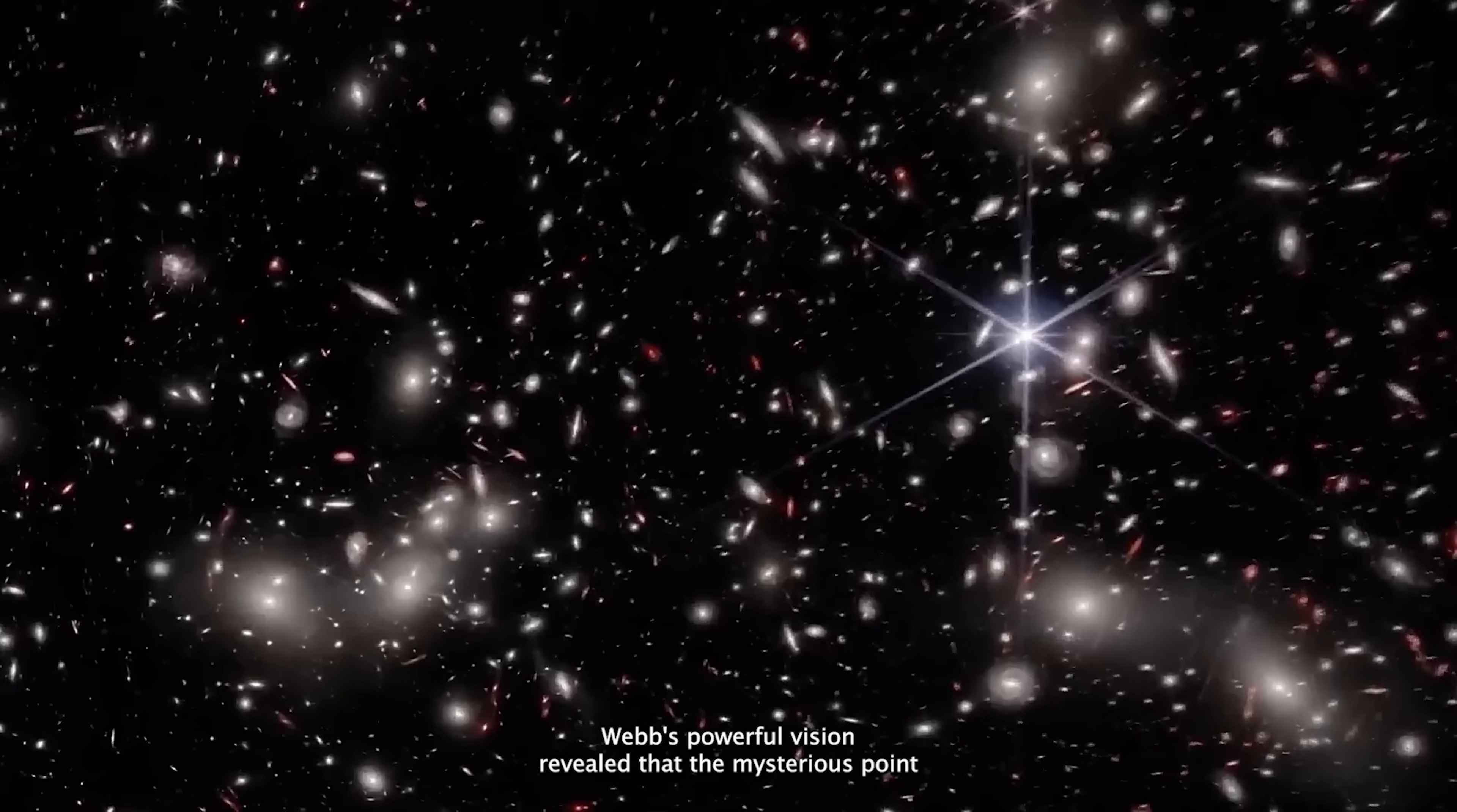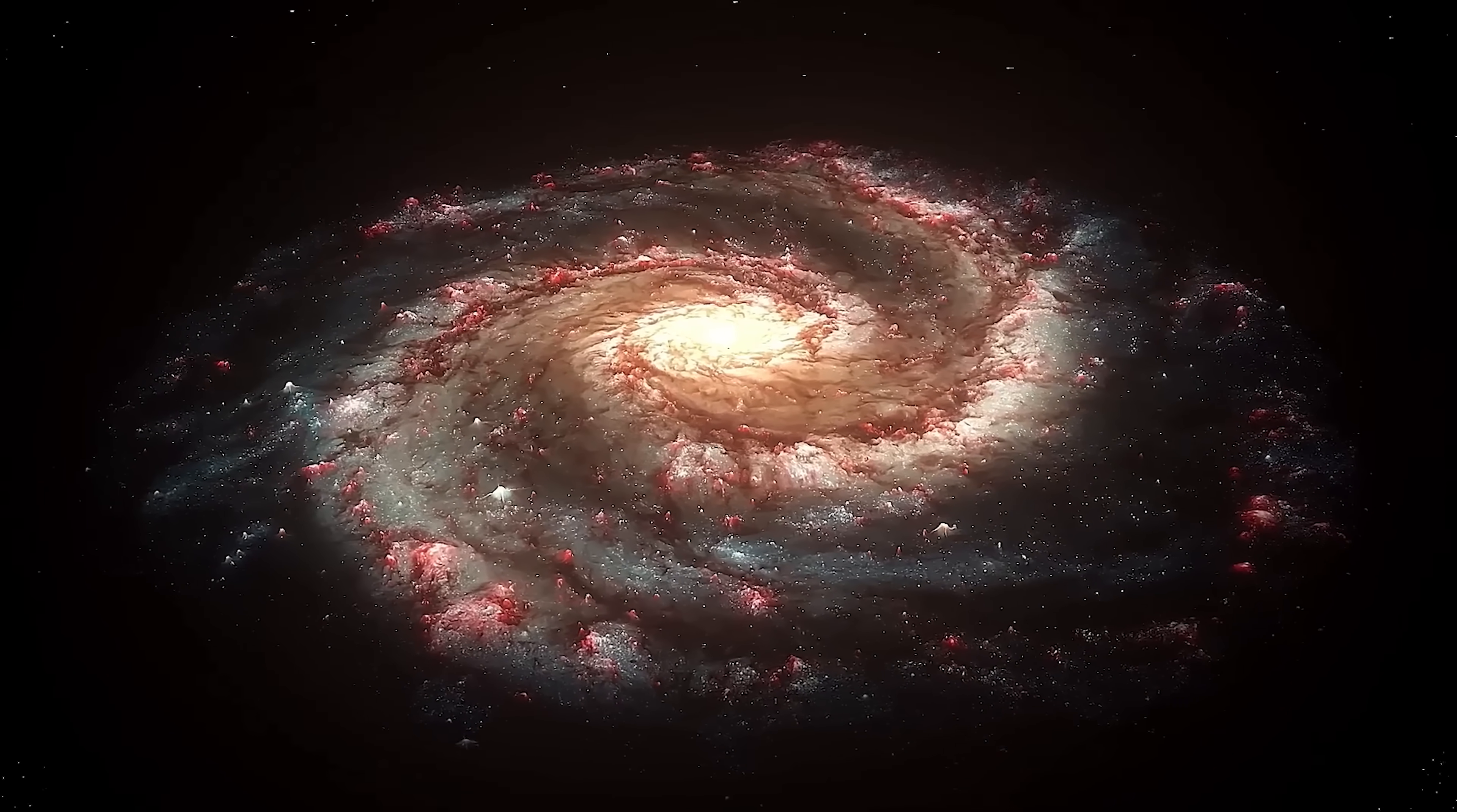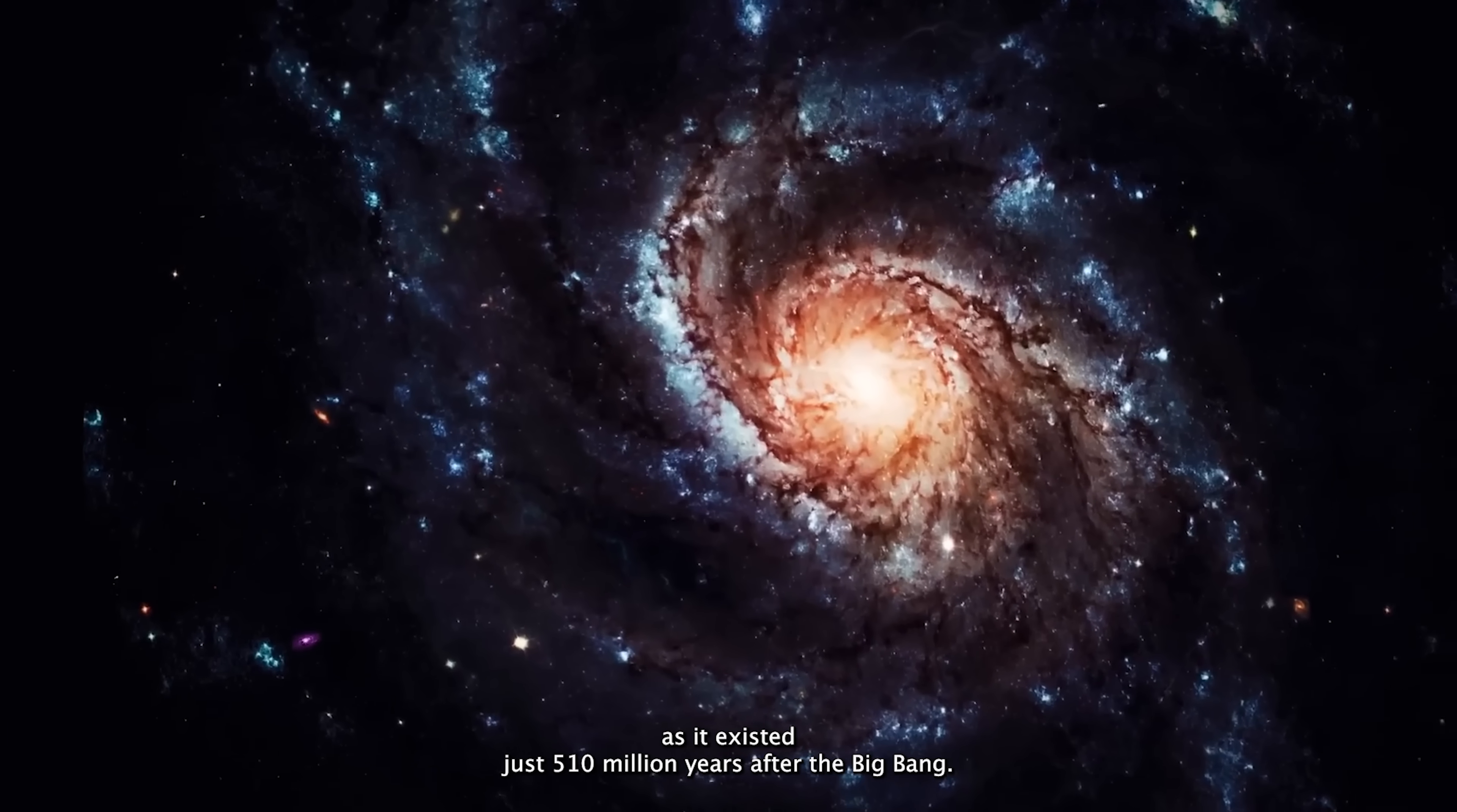Webb's powerful vision revealed that the mysterious point was a primordial galaxy, fully formed far too early. Scientists named it GZ9P3, located at a redshift of 9.3, meaning we are witnessing it as it existed just 510 million years after the Big Bang.